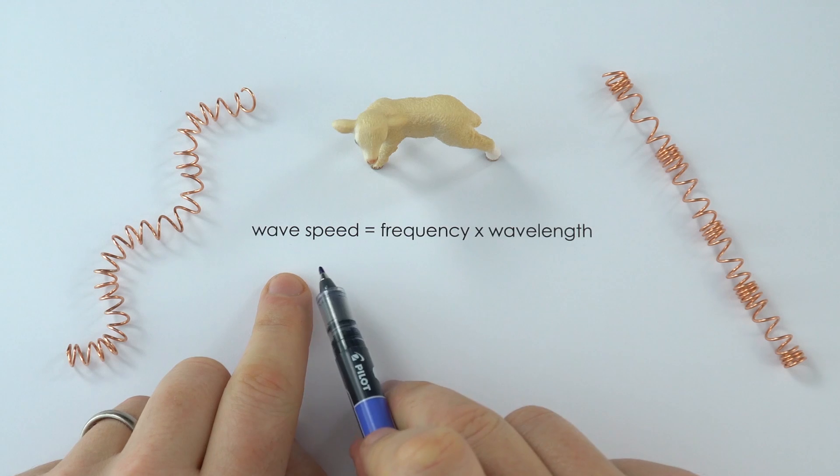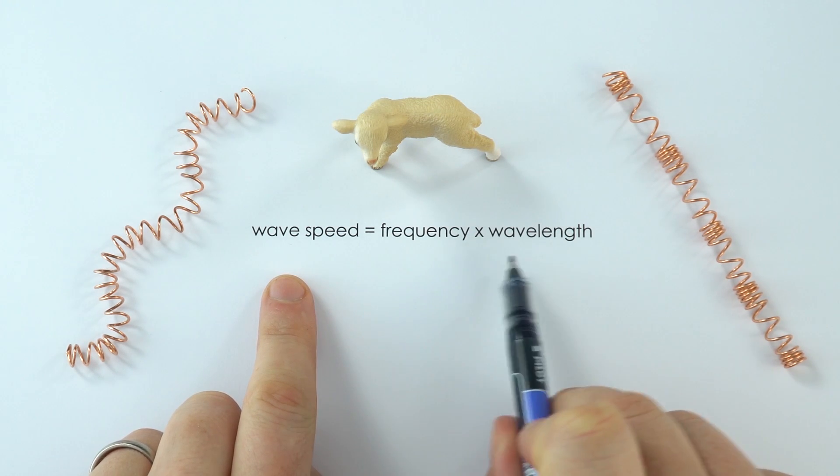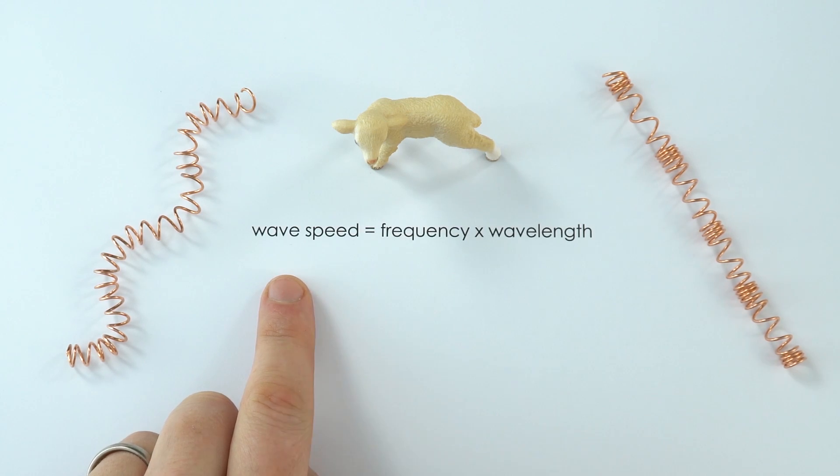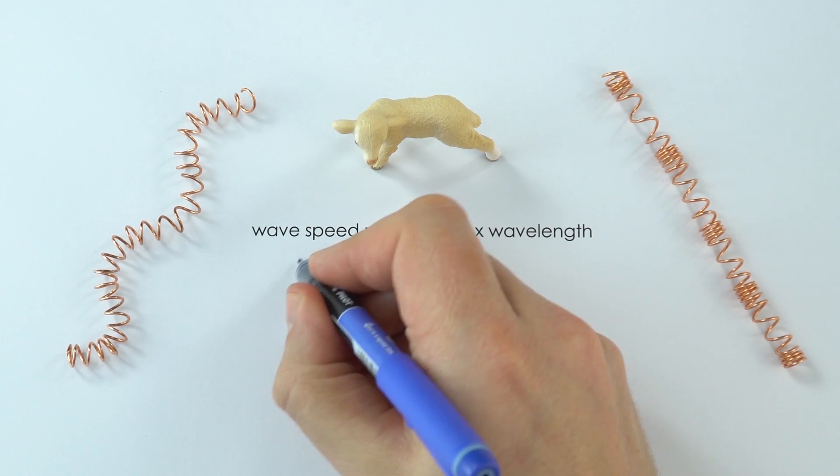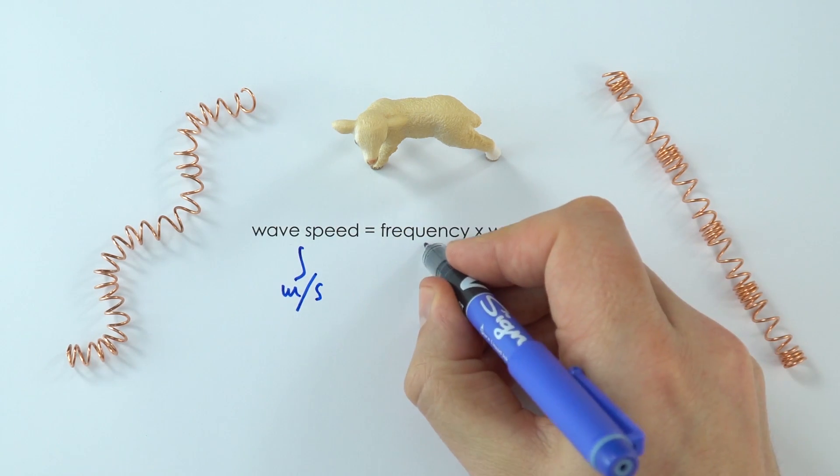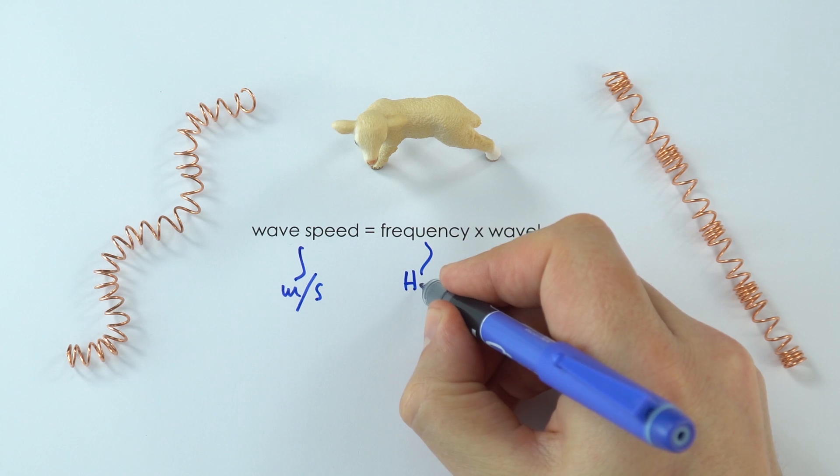So this is the equation that links how fast the wave is traveling with the number of cycles per second and the length of that wave. We can say that wave speed is equal to frequency times wavelength. Now because this is the speed, we measure that in meters per second. Frequency, it's the number of cycles per second, and this is measured in hertz.